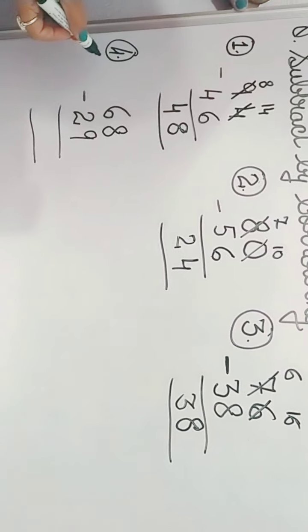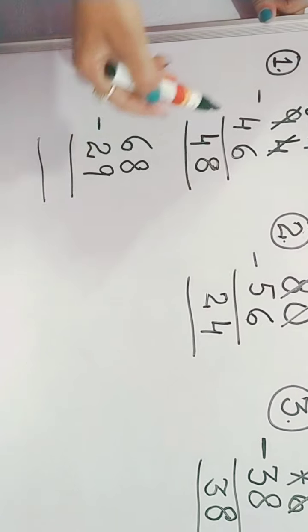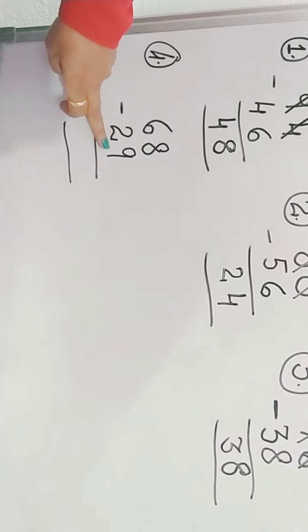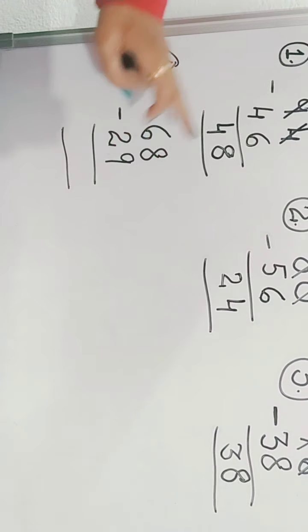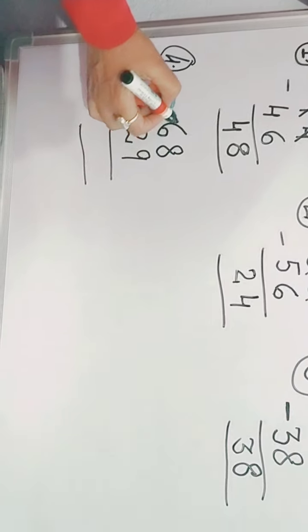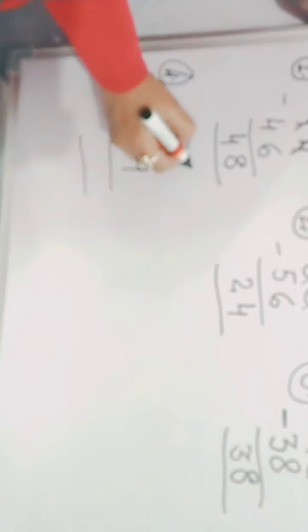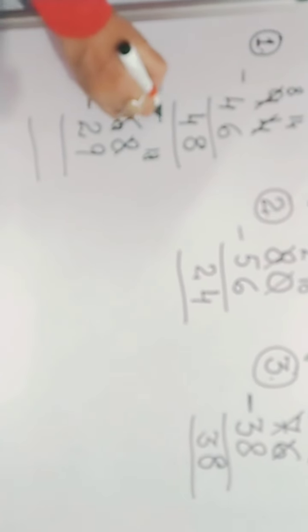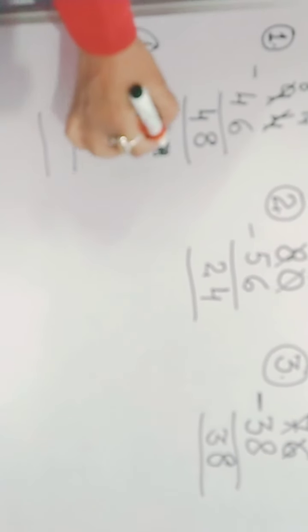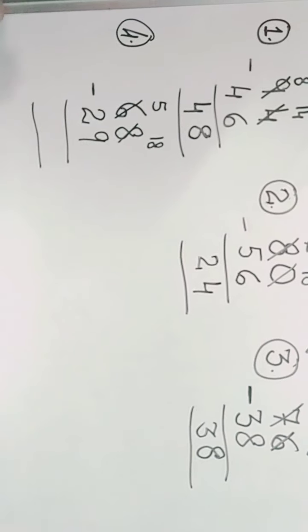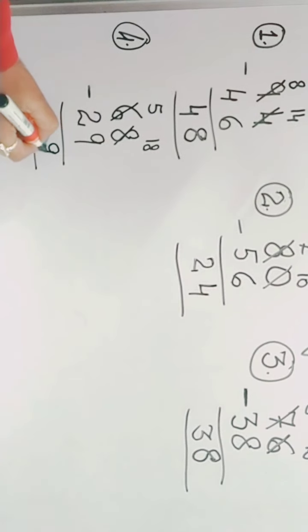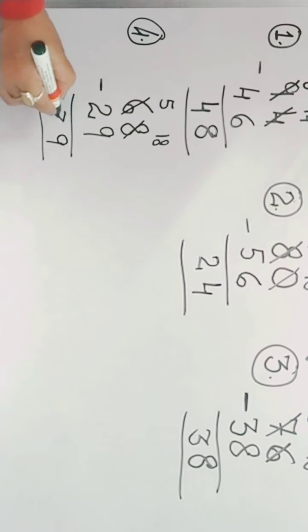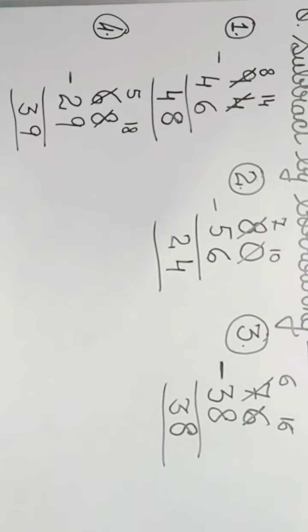Now we come to the next sum, 68 minus 29. Now 8 is smaller and 9 is bigger. So again we will follow the same procedure, we will borrow 1. So 8 will become 18 and 6 will become 5. Now 18 minus 9 will be 9. And 5 minus 2 will be 3. Understood?